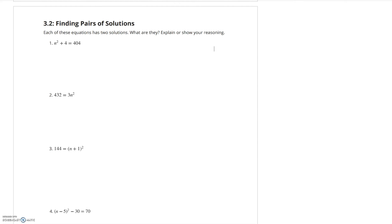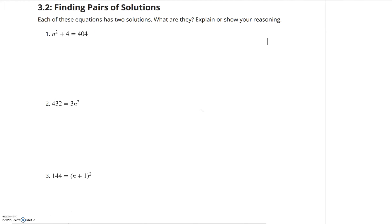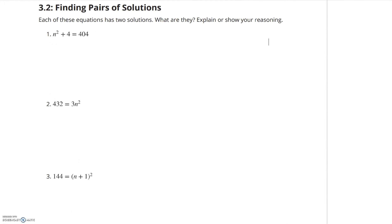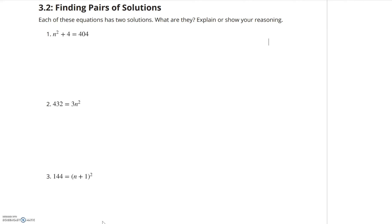We're going to continue solving by taking square roots. These are just some examples of what you'll be expected to do. We follow the exact same steps: get something squared by itself, then take the square root, then break it up if necessary. So here we go.